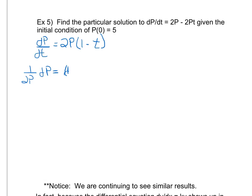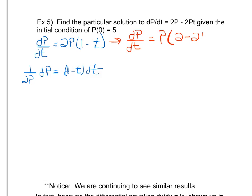Actually, instead of factoring out 2p I'll factor out just p, giving dp/dt equals p times (2 minus 2t). Separating variables gives (1 over p) dp equals (2 minus 2t) dt. Now my integrating is going to be a lot easier because 2 minus 2t is just a polynomial, so no u-substitution needed.